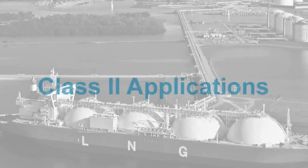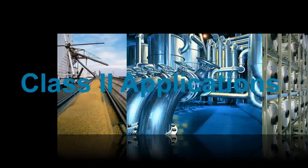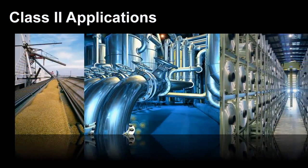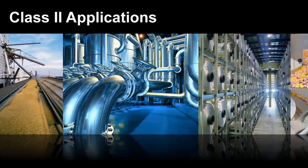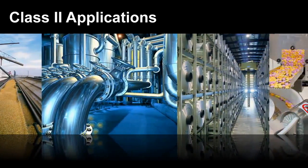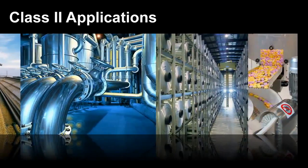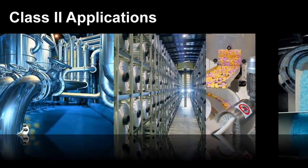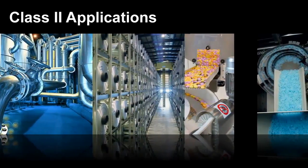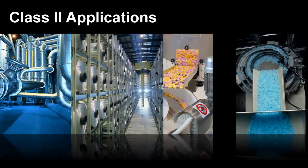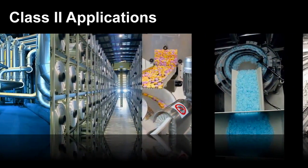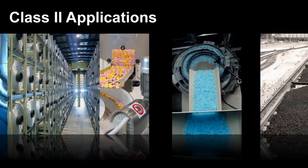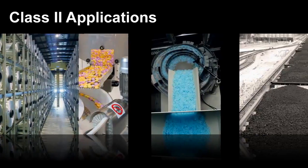Some typical Class 2 locations are grain elevators, flour and feed mills, plants that manufacture, use, or store magnesium or aluminum powders, producers of plastics, medicines, or fireworks, producers of starch or candies, spice grinding plants, sugar plants, cocoa plants, and coal preparation plants or other carbon handling and processing areas.